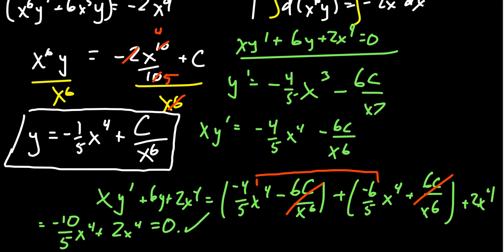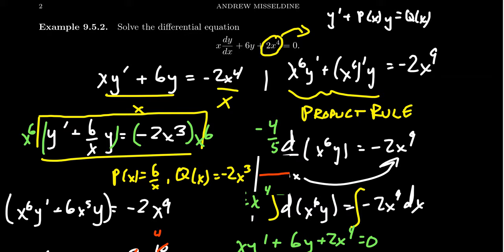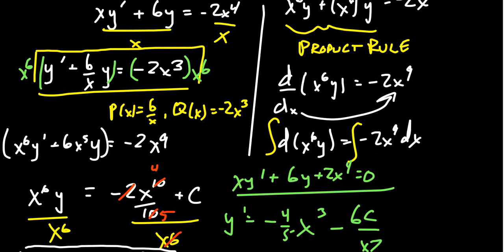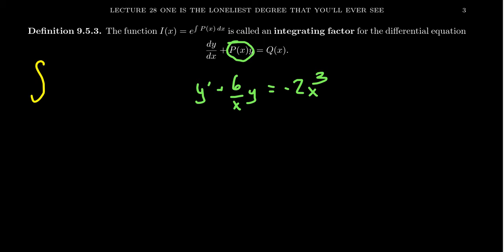So how did this work? Why did we multiply by x to the sixth? We used a technique called integrating factors — a really nice technique for linear differential equations. If you have a linear differential equation in standard form, the integrating factor i of x equals e raised to an antiderivative of p. In our example, we had y prime plus 6 over x times y equals negative 2x cubed, so we need an antiderivative of 6 over x dx. The integrating factor doesn't depend on q, only on p.